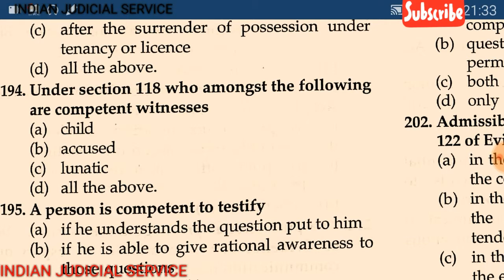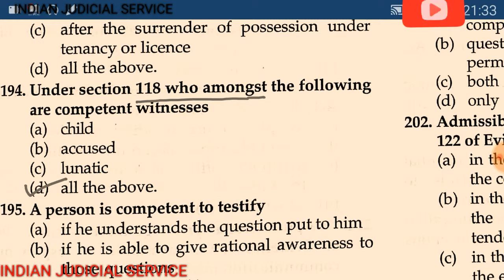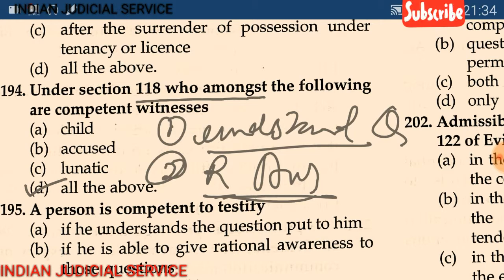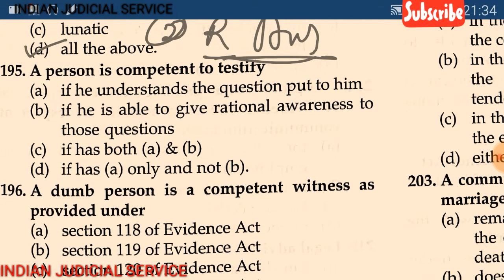Question 194: Under section 118, who among the following is a competent witness? (A) child, (B) accused, (C) lunatic, (D) all of the above. The answer is all of the above. Under section 118, a competent witness is a person who understands the question and can give a rational answer. So whether a child, accused, or lunatic — if they understand the question and are capable of giving a rational answer, they are competent witnesses.